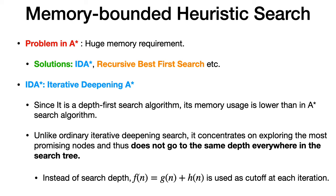Instead of a depth limit, we use the score F(n), which equals G(n) + H(n), where G(n) is the cost incurred to reach the node from the starting node, and H(n) is the estimated cost from the current node to the goal node. We take the summation and use that as a cutoff to decide whether to go deeper or not.